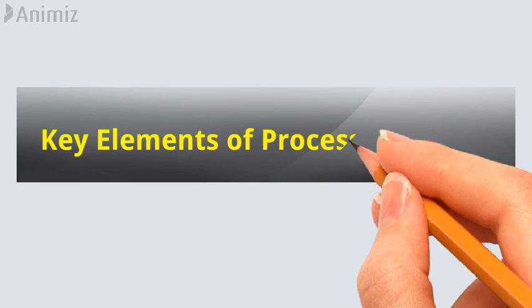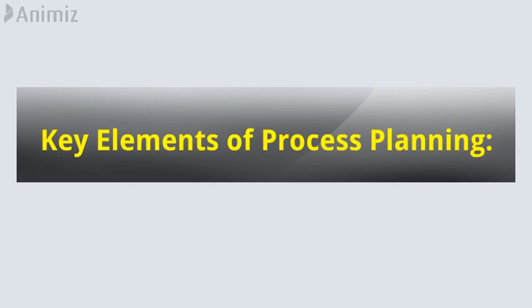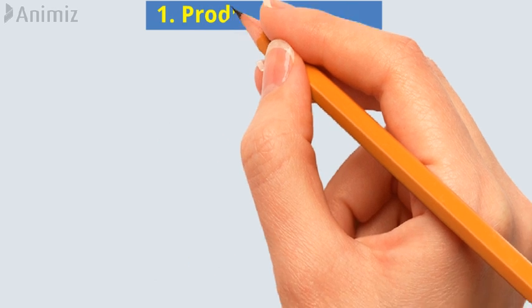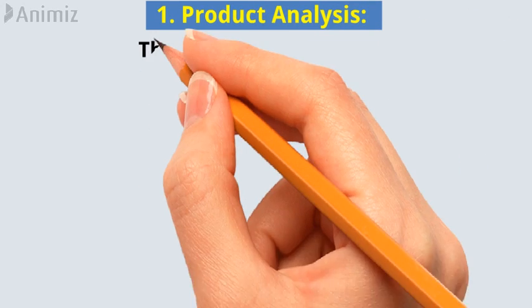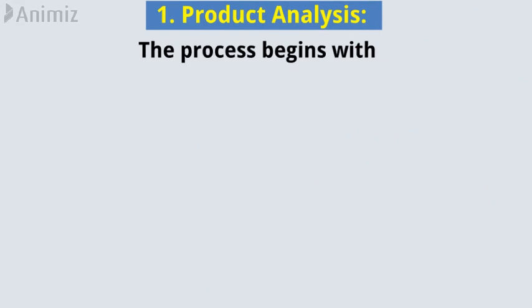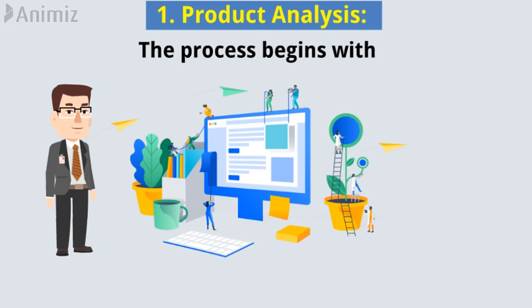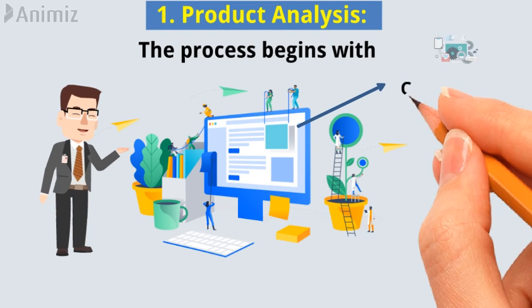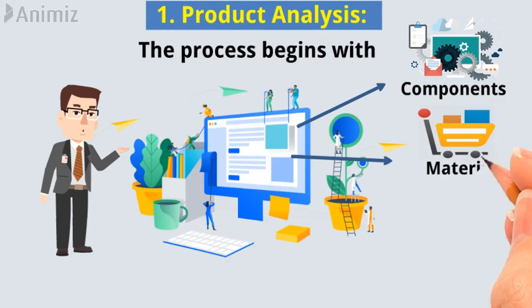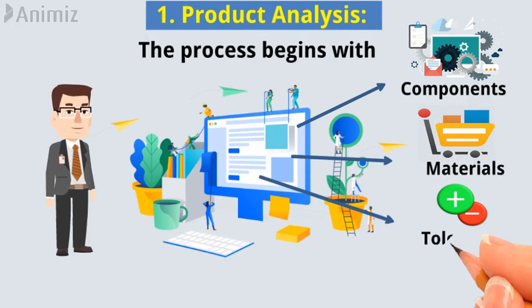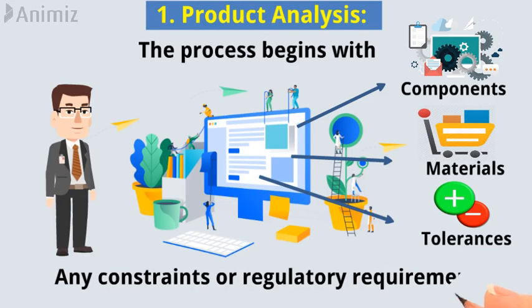Let's discuss key elements of process planning. 1. Product Analysis: The process begins with a comprehensive analysis of the product design. Engineers study the components, materials, and tolerances involved, as well as any constraints or regulatory requirements.